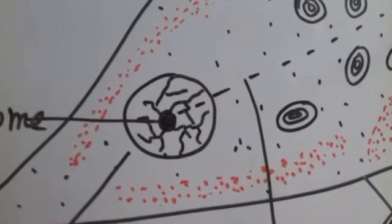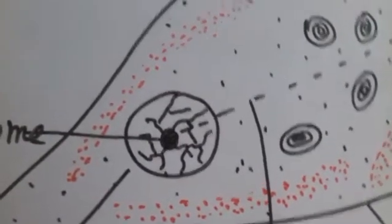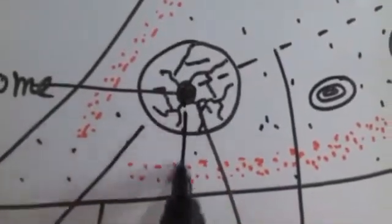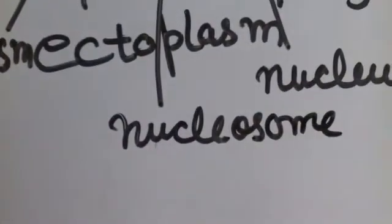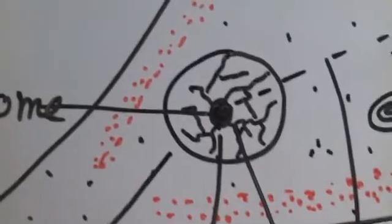Now these thread-like structures are present in nucleus. It is nucleolus, and this is nucleosome. Now I am going to mark it with a red color that this is chromosomes.